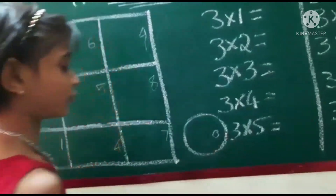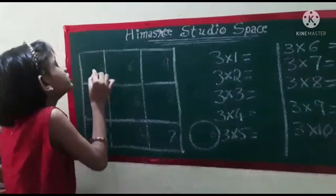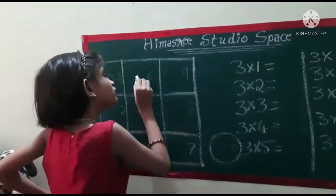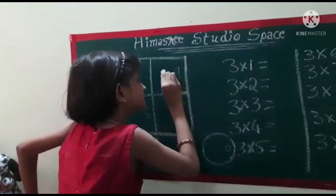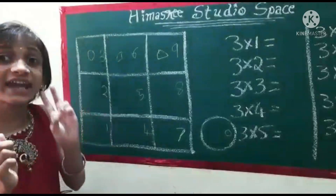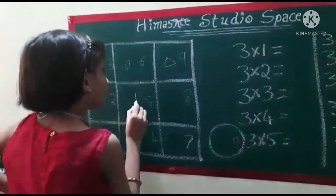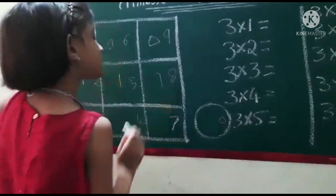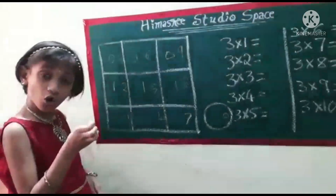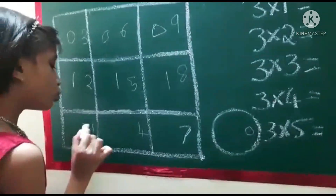In the first row of the tens place, we will be writing zeros all the way down — zero, zero, zero, and so on for each row.